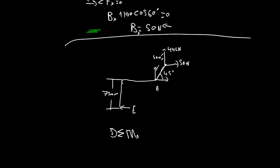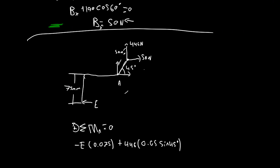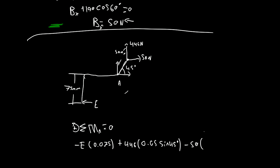So, the summation of moments about A will be our best equation, equals 0. So, we'll get negative E at 0.075 meters. We're going to get that 446 newtons acting counterclockwise, plus 446 at 0.05 meters times the cos of 45 degrees. And we'll get another clockwise from the 50 newton force. Minus 50 at 0.05 times the sine of 45 degrees.